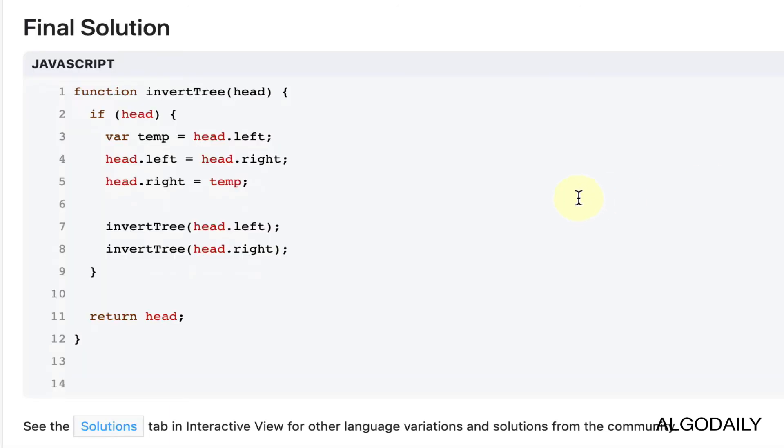So we can look at the solution on algodaly.com. So the function goes, we start with the function signature that just takes in the root tree node or the head tree node. If there is a node, we'll do the swap. So we store the left reference in a variable temp, point the left to the right, and that's this line is where the swap happens. And then the right gets set to the original left. So at this point, we've swapped.